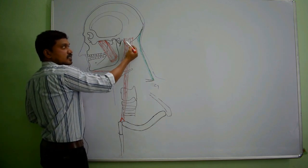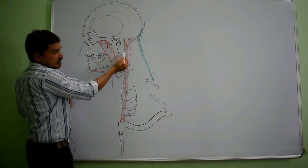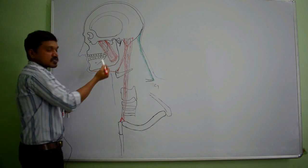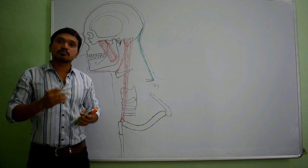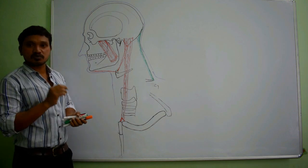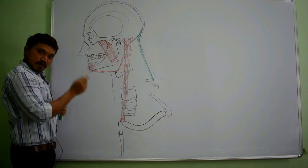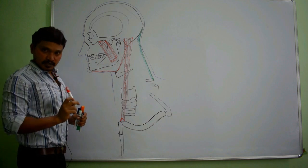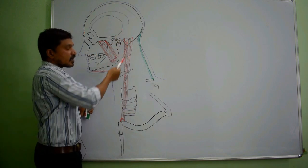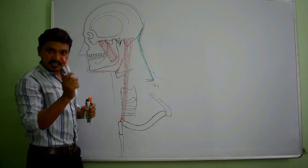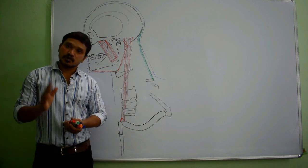Posteriorly: the mastoid process with its attachments — sternocleidomastoid and posterior belly of digastric. Inferiorly: the posterior belly of digastric. Medially: the styloid process and, going still deeper, the pharynx. These are the boundaries of the parotid region, also called the parotid bed or parotid mould. Let me summarize: superiorly — external acoustic meatus and temporomandibular joint; anteriorly — posterior border of the ramus of the mandible, masseter, and medial pterygoid; posteriorly — mastoid process, sternocleidomastoid, and posterior belly of digastric; medially — styloid process and pharynx; inferiorly — posterior belly of digastric.